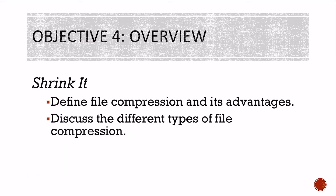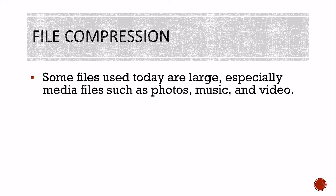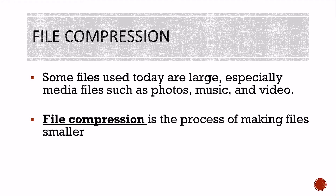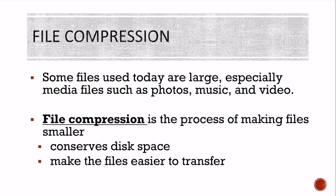Objective four overview: shrink it. We're going to define file compression and its advantages and discuss the different types of file compression. Some files used today are very large, especially media files such as photos, music, and videos. File compression is the process of making files smaller in order to conserve disk space and make files easier to transfer. Some large photos or videos cannot be transferred through email, so you have to compress them to make the file size smaller.